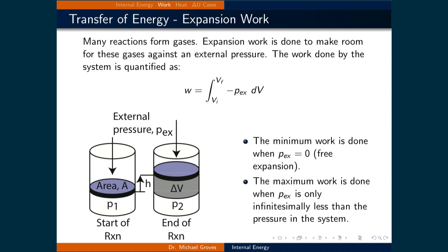Let us now focus on quantifying work. There are many types of work, and for this discussion we will examine expansion work. Many reactions form gases, and expansion work is done to make room for these gases against an external pressure. The work done by the system is quantified as the integral over the initial volume to the final volume of minus P external times dV. This integral is illustrated in a figure depicting a before and after scenario of a gas expanding by a certain volume against an external pressure.